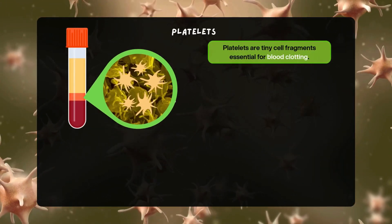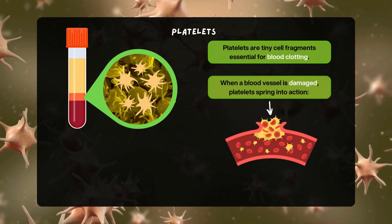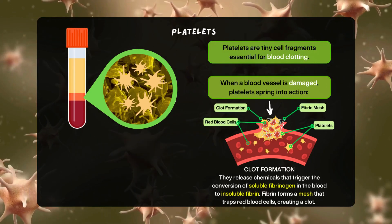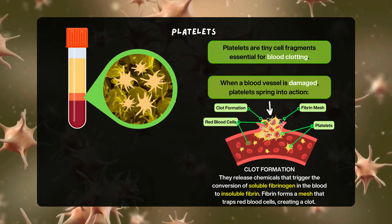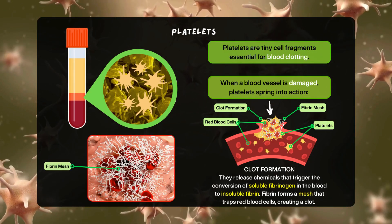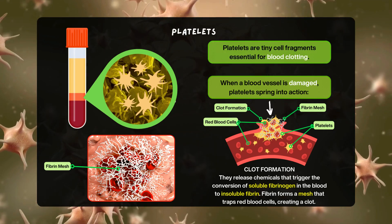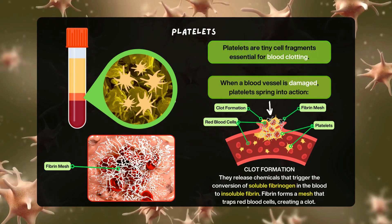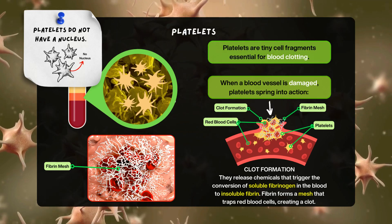Platelets are tiny cell fragments essential for blood clotting. When a blood vessel is damaged, platelets spring into action. To form a clot, platelets release chemicals that trigger the conversion of soluble fibrinogen in the blood to insoluble fibrin. Fibrin forms a mesh that traps red blood cells, creating a clot. The clot prevents the loss of excess blood and prevents potentially harmful microorganisms from entering the bloodstream. Unlike white blood cells, platelets do not have a nucleus.